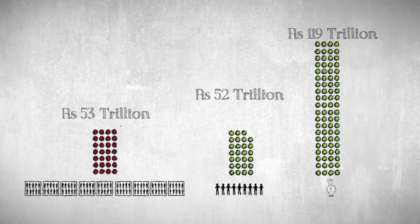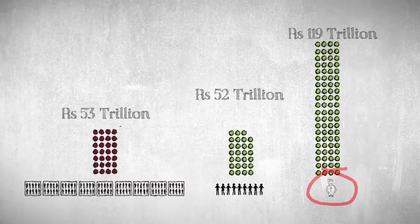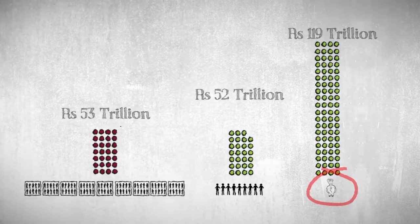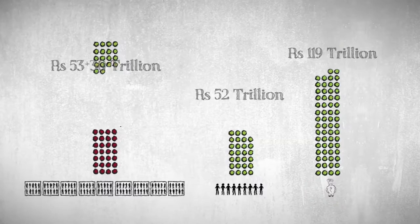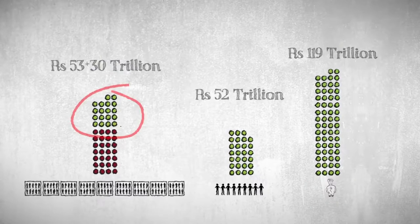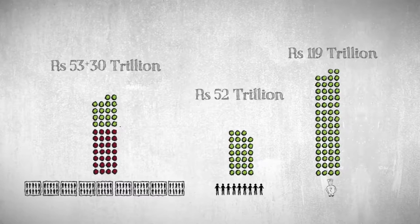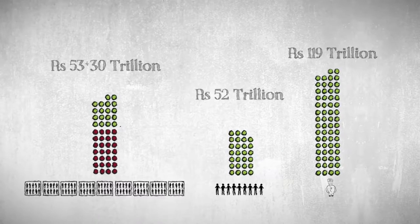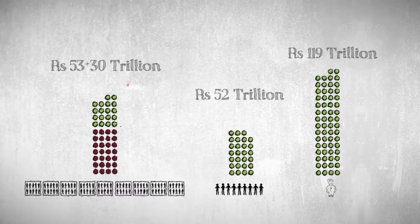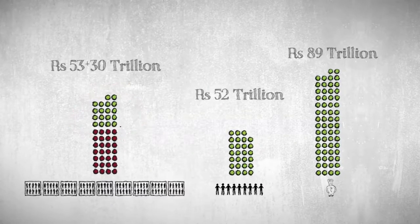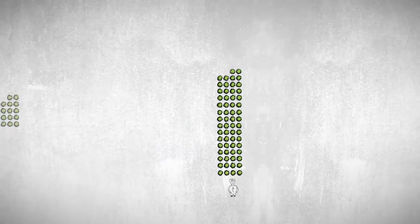The top 1% has 119 trillion. If even a paltry 30 trillion of that would go to 70% of our population, then they will be able to live a decent life. Now before you scream, that is socialism! Remember that with 89 trillion, the top 1% still remain the proprietors of India's wealth.